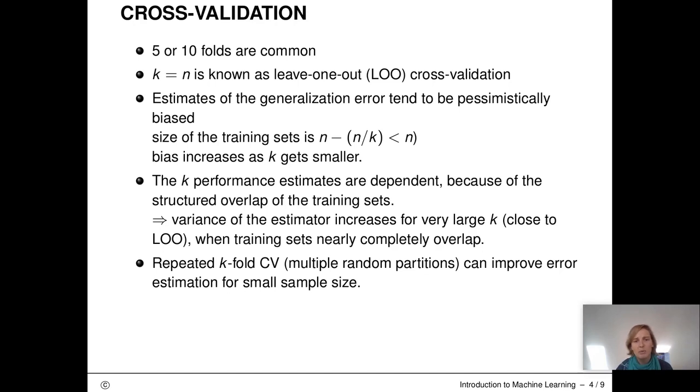Our final estimate will probably be worse than the true error as we only use a subset of the data for computing the model. With smaller k, this bias gets worse. Another issue is that the k training sets have overlapping observations. For this reason, the performance estimates are not independent. This means that for very large k, the variance of the estimators get worse and worse, because training sets nearly completely overlap. The test sets get very small at the same time. If time permits, we recommend doing repeated cross-validation with differing splits. This has been shown to improve the variability of error estimates and thus improves the error estimation, particularly in small samples.